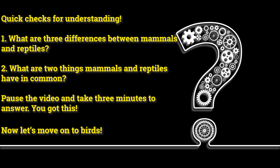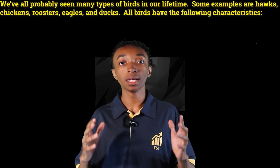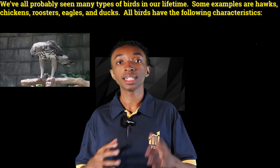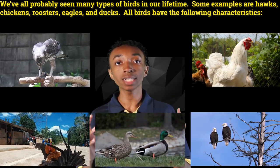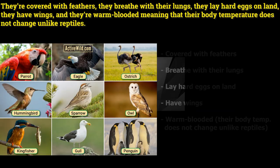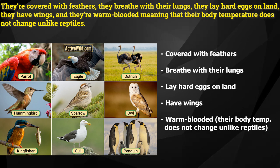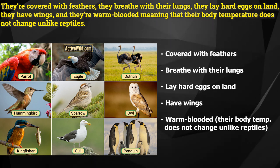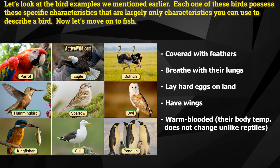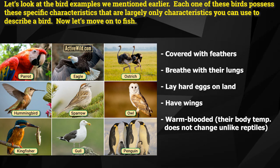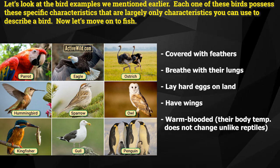Now let's move on to birds. We've all probably seen many types of birds in our lifetime. Some examples are hawks, chickens, roosters, eagles, and ducks. All birds have the following characteristics: they're covered with feathers, they breathe with their lungs, they lay eggs on land, they have wings, and they're warm-blooded, meaning that their body temperature does not change unlike reptiles. Each one of these birds possesses these specific characteristics that are largely only characteristics you can use to describe a bird.